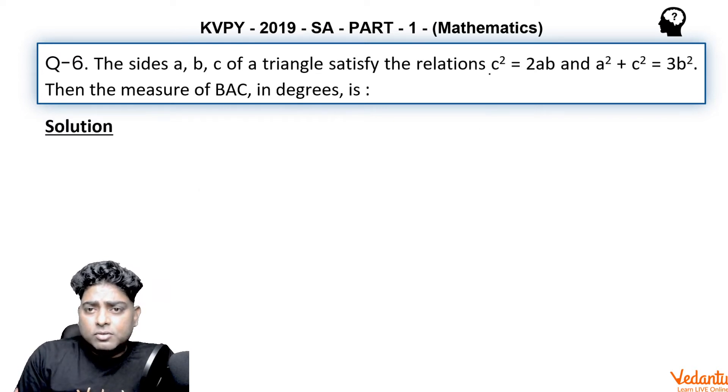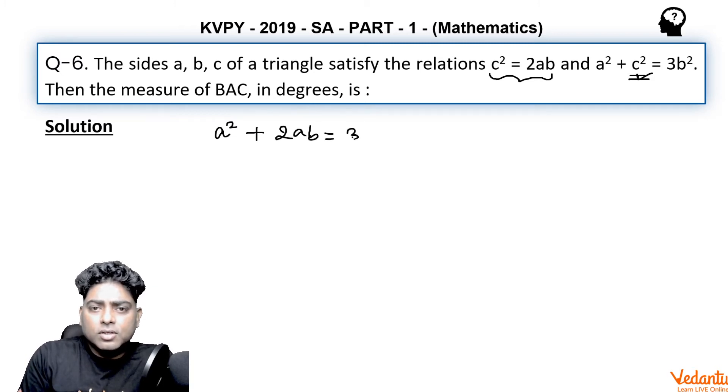As you can see, c² is given as 2ab, and c² is appearing here again, related with a and b. So it's better to eliminate c² here. We can easily see that we will get a² + 2ab = 3b². If you take the terms on the left,